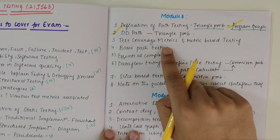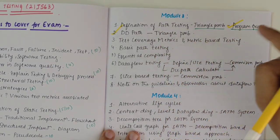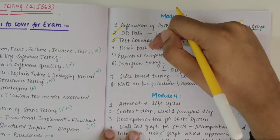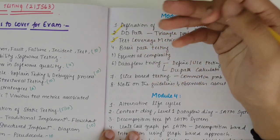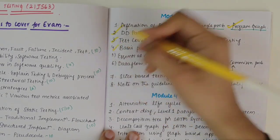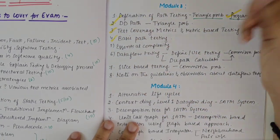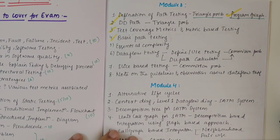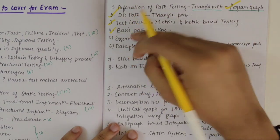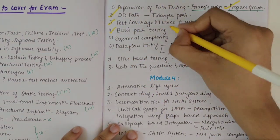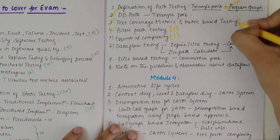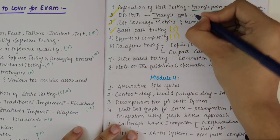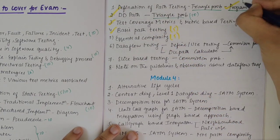Then we have test coverage matrices and metric-based testing — again important. Then we have basic path testing definition writing. Then we have essential complexity — also an important topic, which could be asked for five marks. The test coverage matrices and metric-based testing topics would surely be asked for 10 marks only.